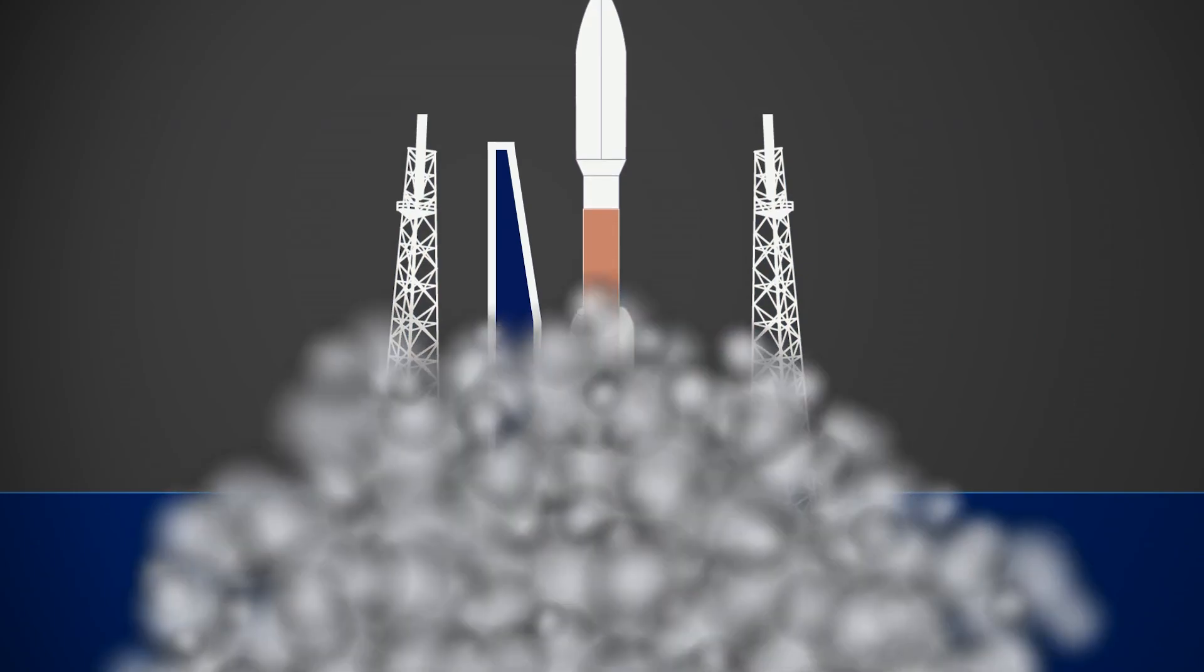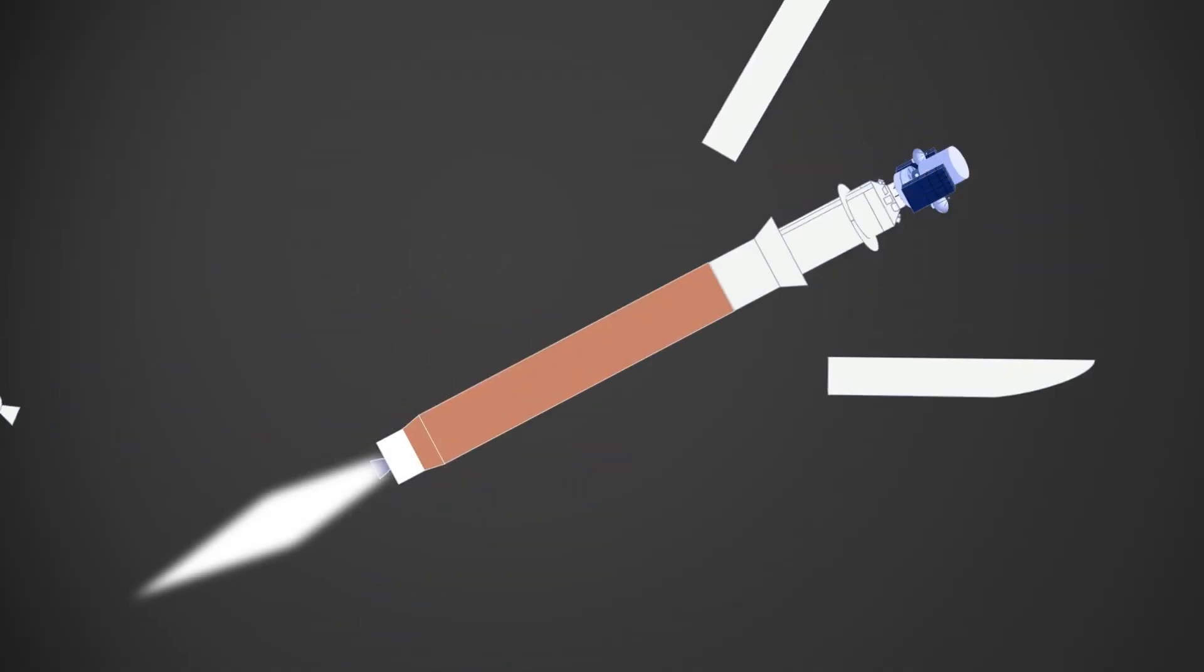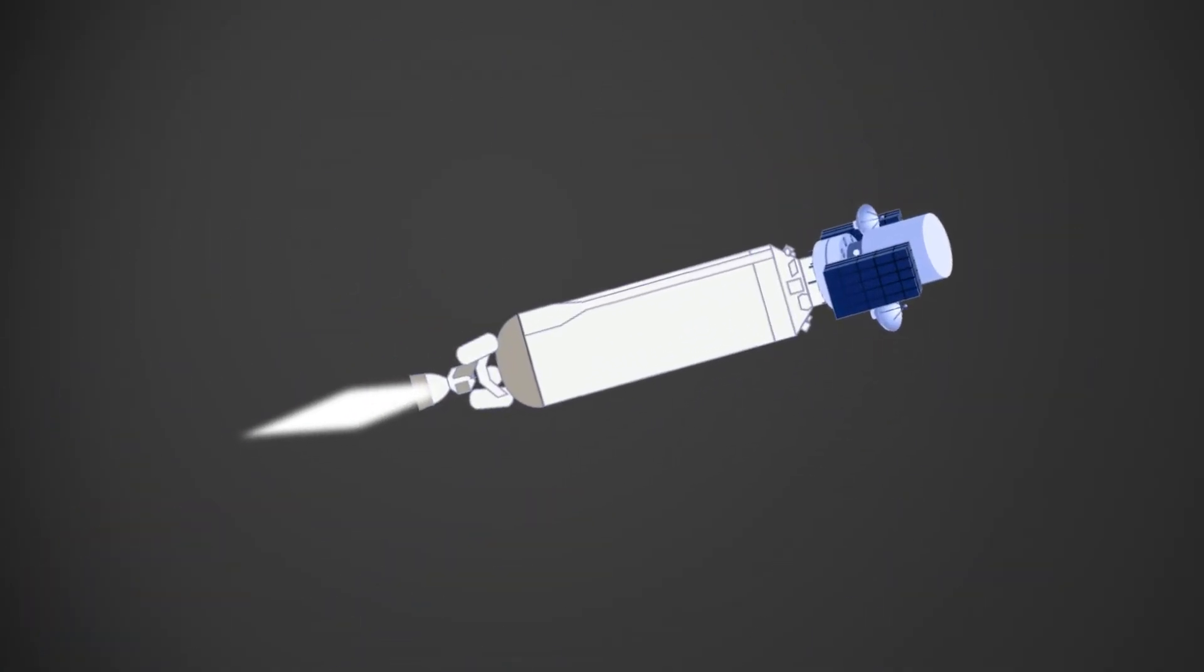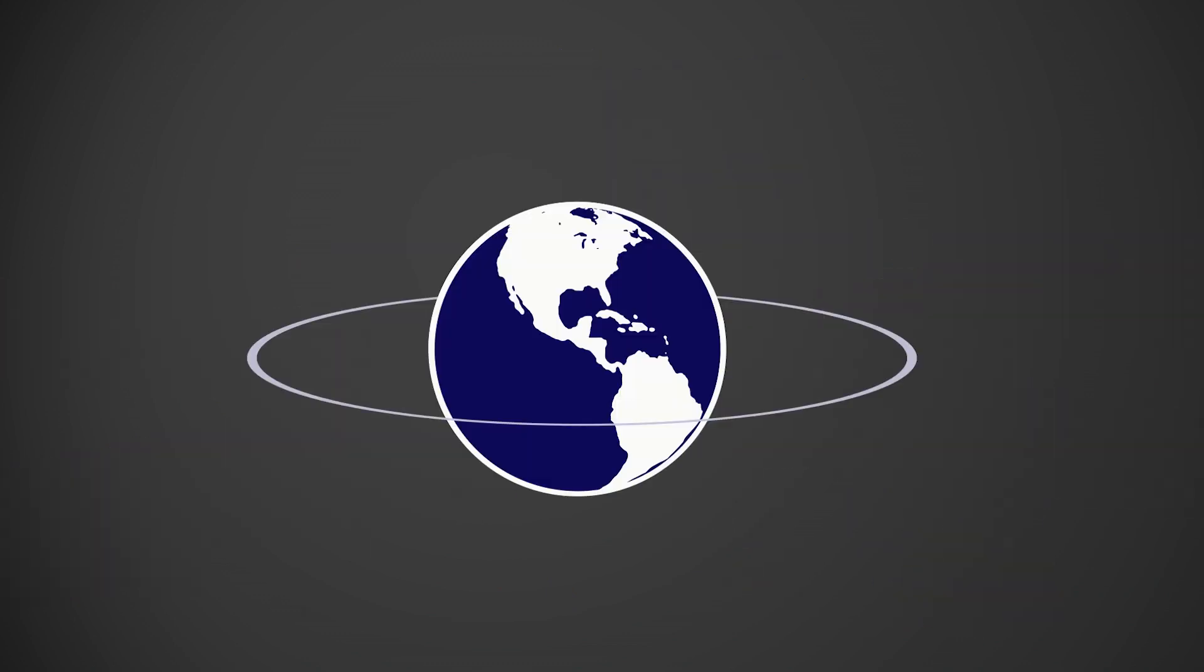To get to GEO, you first launch into LEO, where you will stay until your rocket's upper stage takes you the rest of the way, by using one of the orbit intersections that we discussed earlier. So let's say I make it from Earth to LEO, then how do I get to GEO?